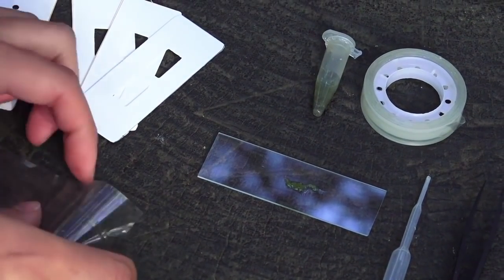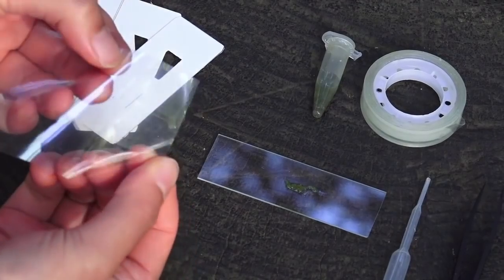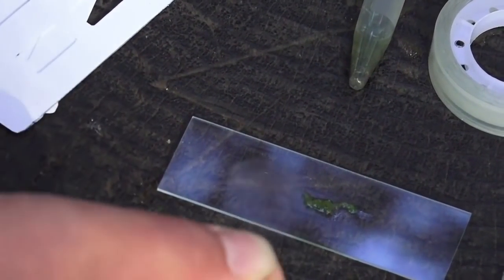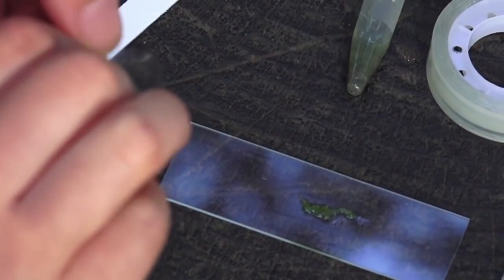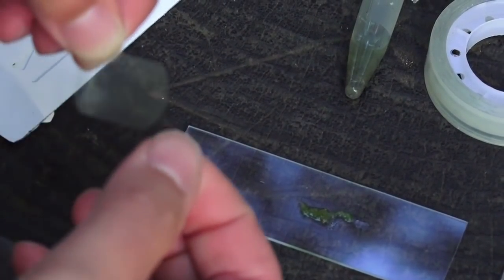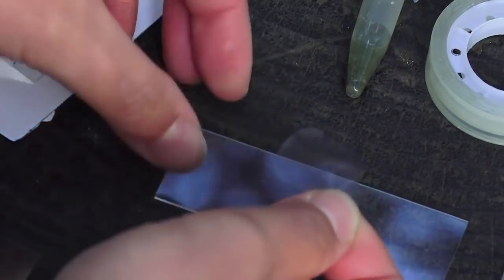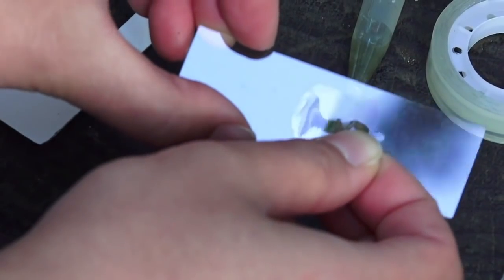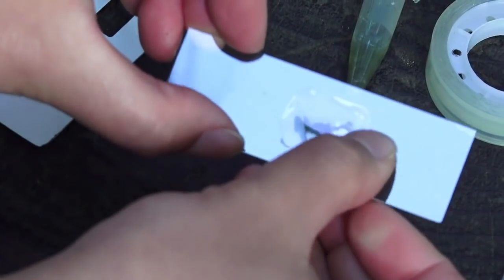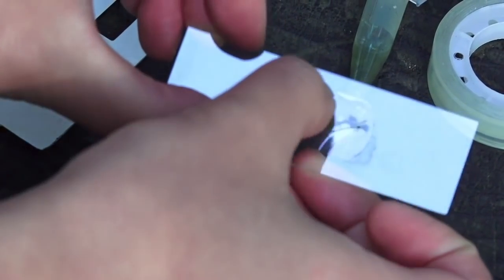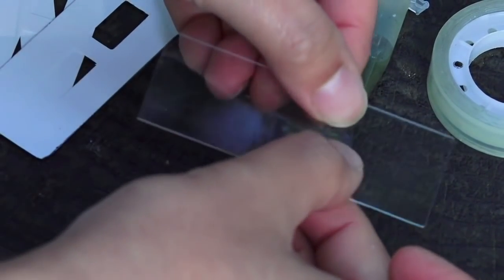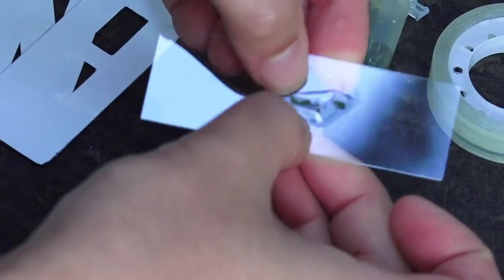Then your kit comes with a cover slip stickers. Just take one of this and then make sure you're holding the edges so that you don't leave your fingerprints right in the middle. And place it right on top of your specimen like so. And it should stick pretty firmly like so.